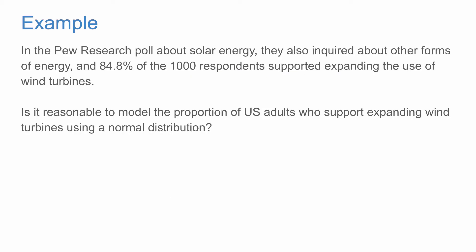Let's consider another example. In the Pew Research poll about solar energy, they also asked about other forms of energy. And 84.8% of the 1,000 respondents supported expanding the use of wind turbines. So is it reasonable to model the proportion of US adults who supported expanding wind turbines using a normal distribution for this poll?